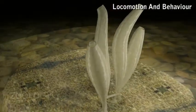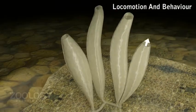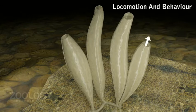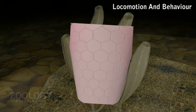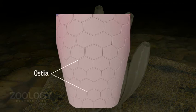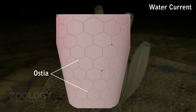Essential life processes of Leucosolenia depend upon a continuous uninterrupted flow of water through its porous body. Water current is caused by constant beating of the flagella of millions of choanocytes. Water enters the spongocoel through ostia and exits through the osculum.